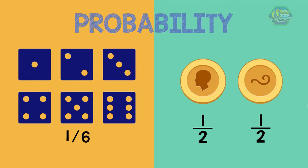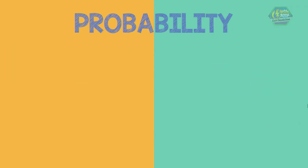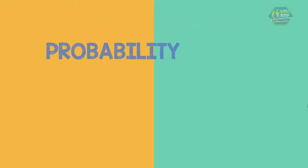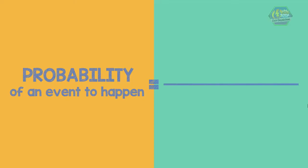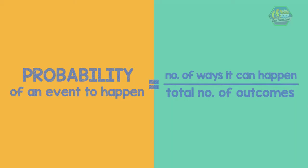So in general, in order to know the probability of an event happening, we just need to divide the number of ways it can happen by the total number of outcomes. Let's try to visualize it by using the probability line.